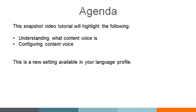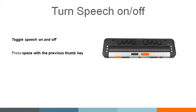Remember that to toggle your speech, once you have updated, the command to do that is space with your leftmost, or the previous thumb key. When I do that I will turn speech off or on. I am on my main menu. I'm going to turn speech on by pressing space with my previous thumb key and then letting go.